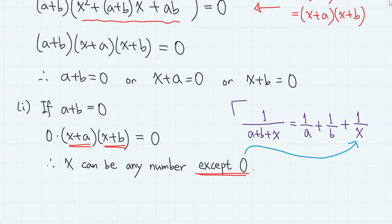Because x equals 0 will make the denominator of the original equation 0. You can also check this from the original equation. When a plus b equals 0, thus b equals minus a, then the equation becomes 1 over a minus a plus x equals 1 over a plus 1 over minus a plus 1 over x. So you can see that x can be any number except 0.